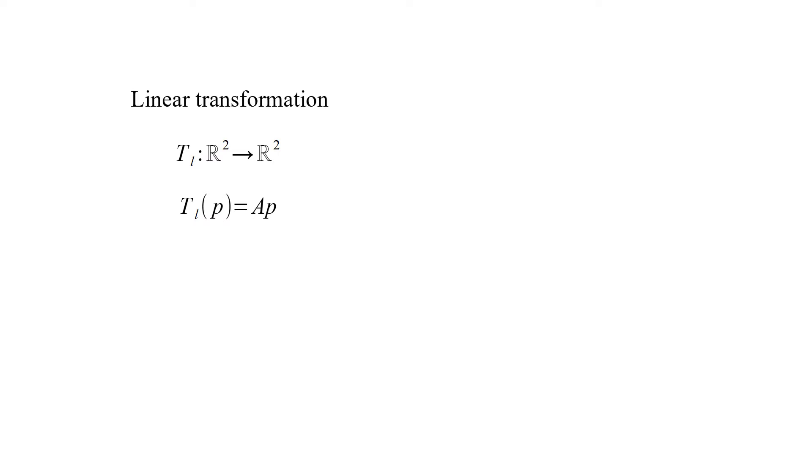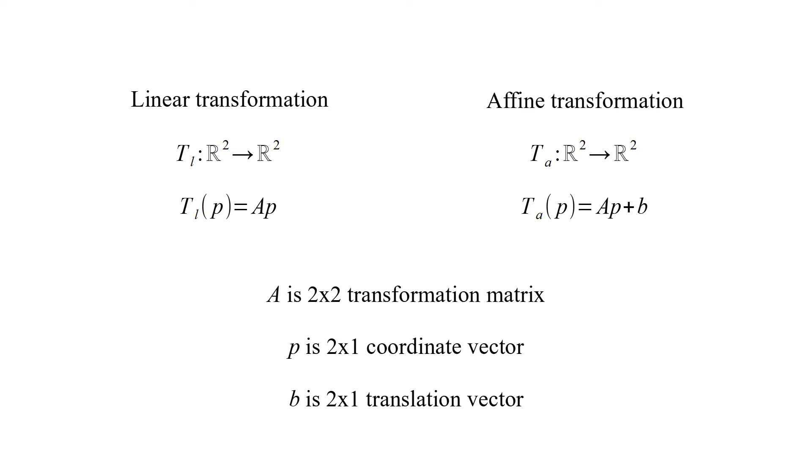Linear transformation T_L of P is equal to A times P. Affine transformation T_A of P is equal to A times P plus B. A is 2 by 2 transformation matrix, P is 2 by 1 coordinate vector, and B is 2 by 1 translation vector.